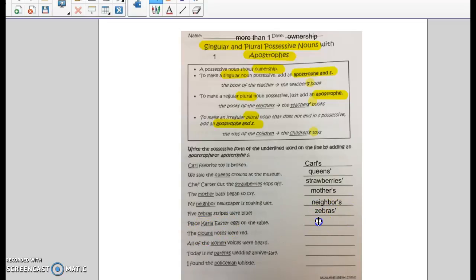Place Carla Easter egg on the table. Well, it's only one Carla. So put Carla apostrophe S. Still just one Carla. The clowns' noses were red. It's more than one clown. So we had the S already on the word, add the apostrophe afterwards. Clowns, more than one clown.